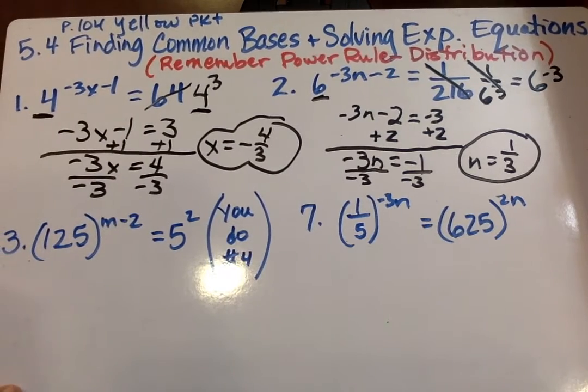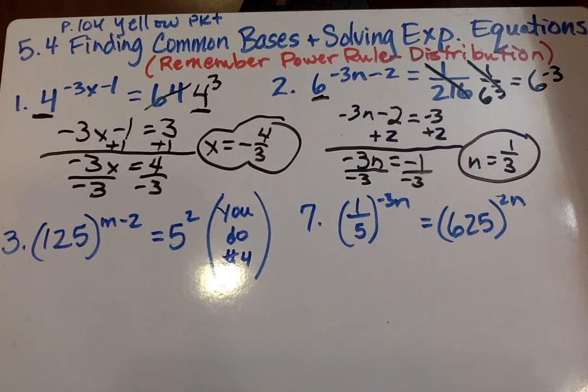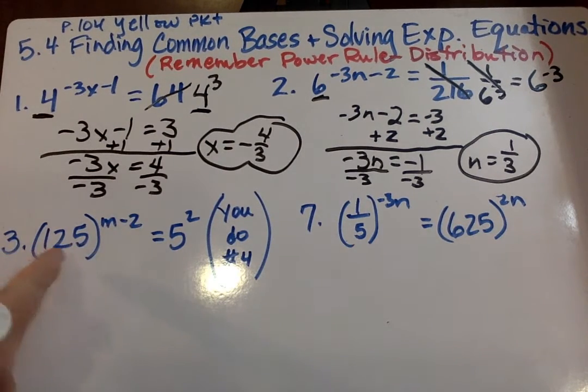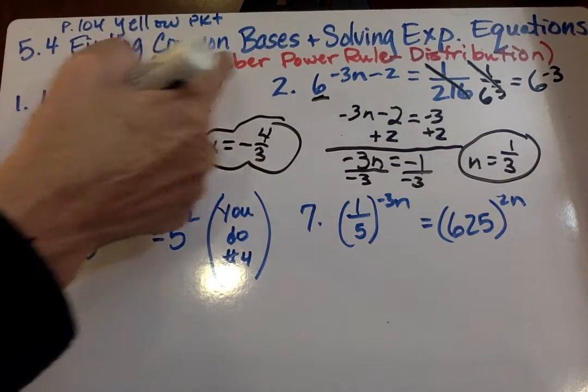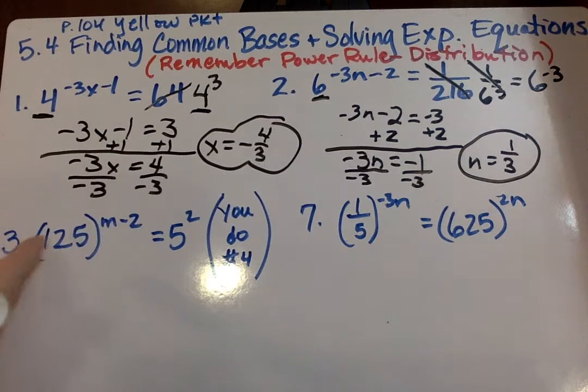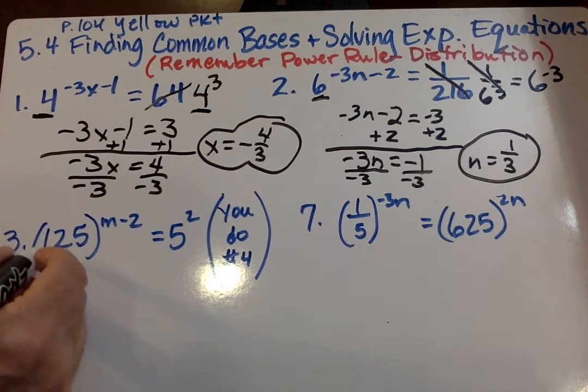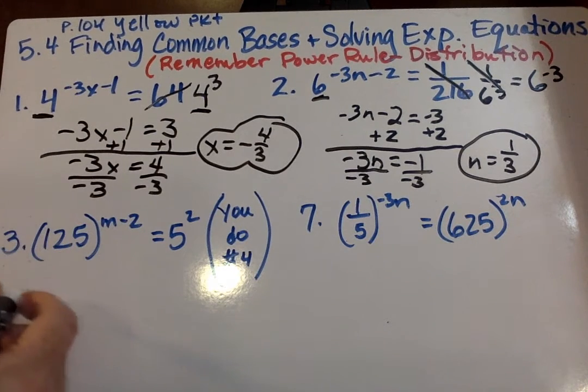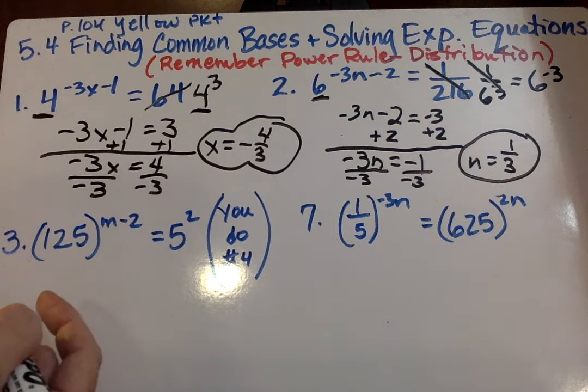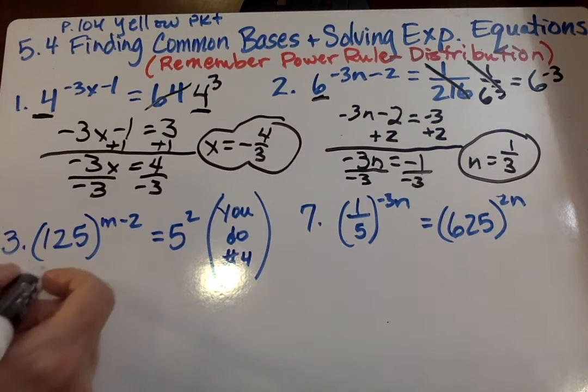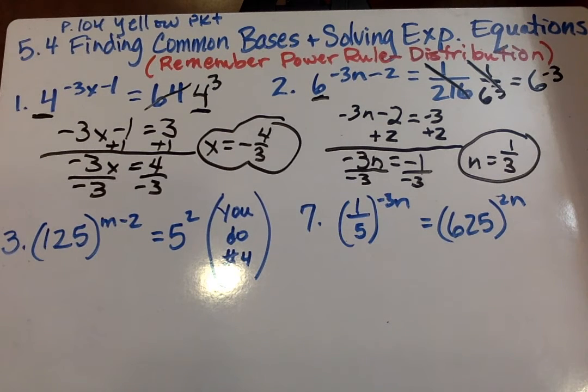Now we're going on to number 3. We have a 5 over here, and this is not a 5, so we have to convert it to a 5. And this is when it says, remember power rule, the distribution. So we're going to use the power rule here. 5 times what is 125? 5 times 5. In other words, how many 5s go into 125? 5 times 5 is 25. Let's just say it's 5 to the x 3. Yep. So it's 5 to the third.